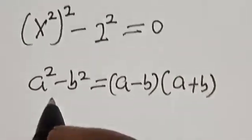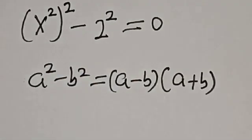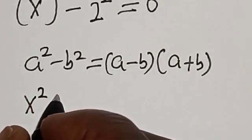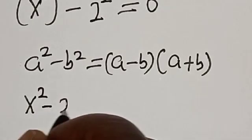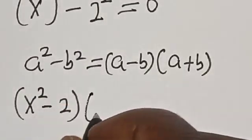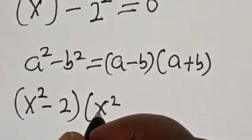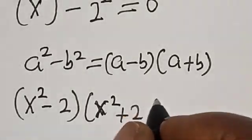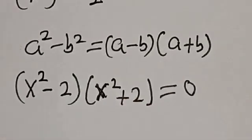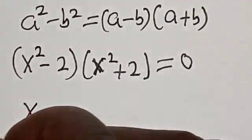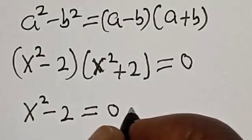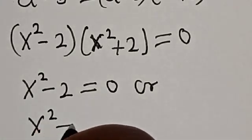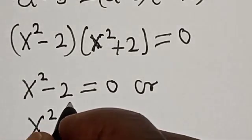Our a in this case is x squared and b is 2. Let's substitute: (x squared minus 2) multiplied by (x squared plus 2) is equal to 0. Therefore, there are two cases here: x squared minus 2 is equal to 0, or x squared plus 2 is equal to 0.